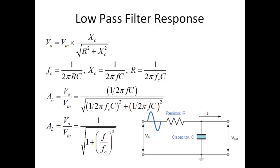The cutoff frequency fc for this circuit is fc = 1 / (2πRC), and the reactance of the capacitor is Xc = 1 / (2πfc). Substituting these values into the voltage divider formula, the voltage gain Al = V_output / V_input = 1 / √(1 + (f/fc)²). This is the gain formula for a passive low-pass filter that we need to remember.